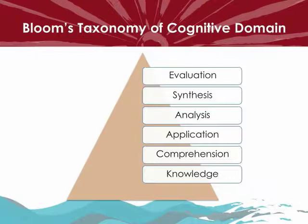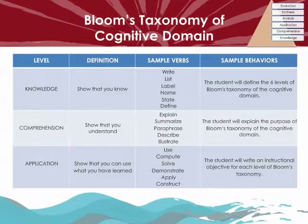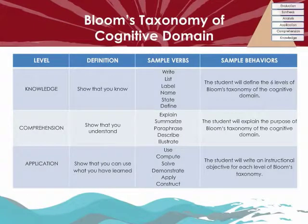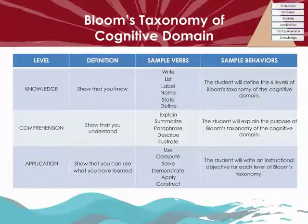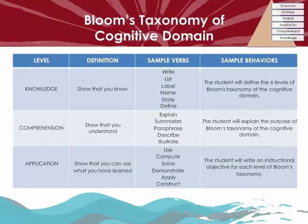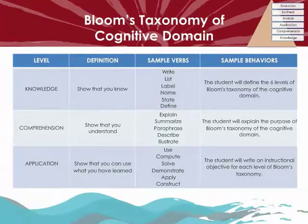Let's use this taxonomy to help write objectives. The Knowledge level is to show what you know, using verbs such as write, list, and label. Example: the student will define the six levels of Bloom's Taxonomy of the Cognitive Domain. The Comprehension level is to show understanding using verbs such as explain, summarize, and describe. Example: the student will explain the purpose of Bloom's Taxonomy of the Cognitive Domain. The Application level is the ability to use what was learned, using verbs such as use, compute, solve, demonstrate, and apply. Example: the student will write an instructional objective for each level of Bloom's Taxonomy.